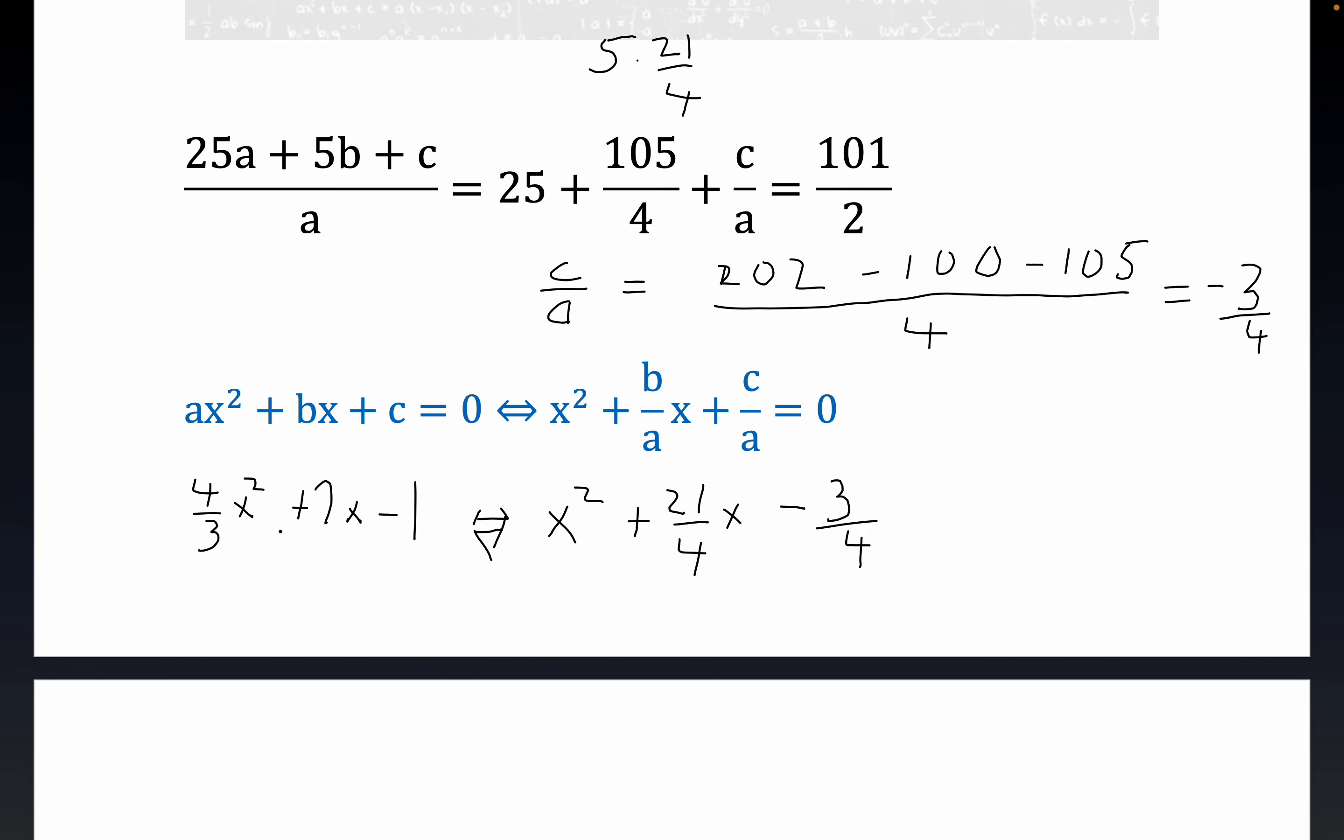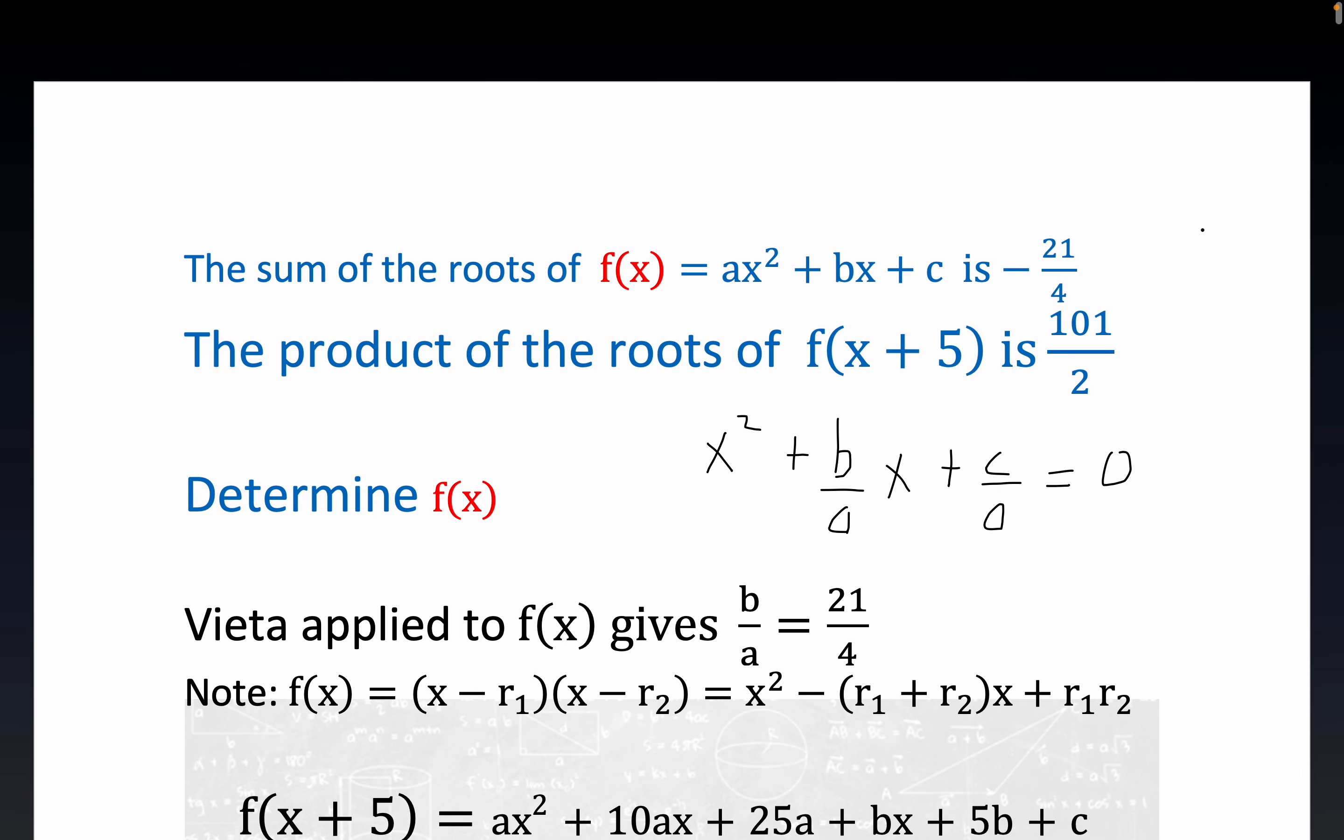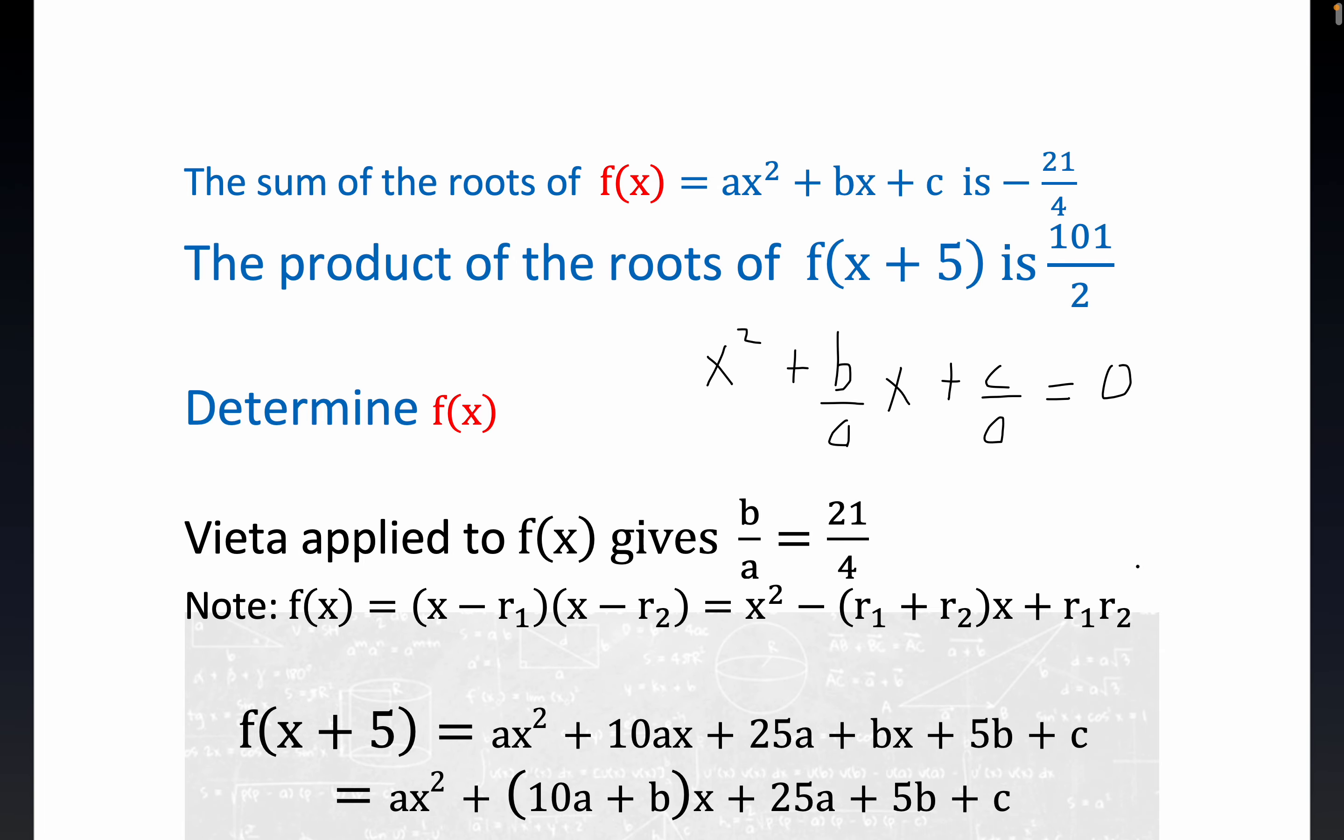So this is a couple of answers. This is the monic solution for our F of X. So these are all equal to F of X. And they all satisfy the original condition of the sum being minus 21 over four and the product of the translate being 101 over two. Notice we have no clue what those zeros are, but we know the polynomial that produce these two initial conditions.